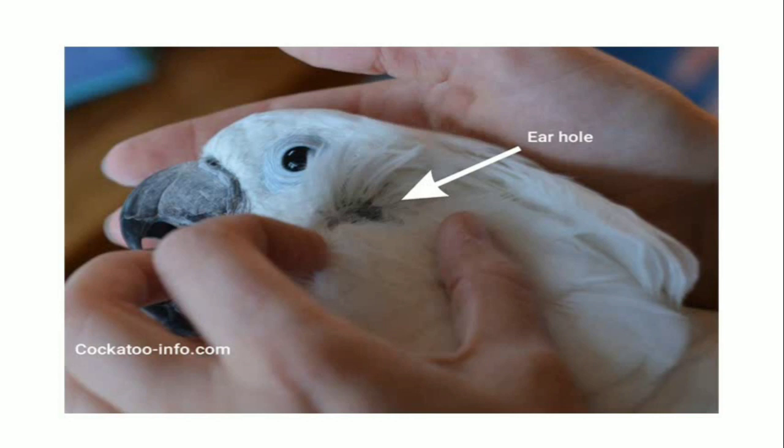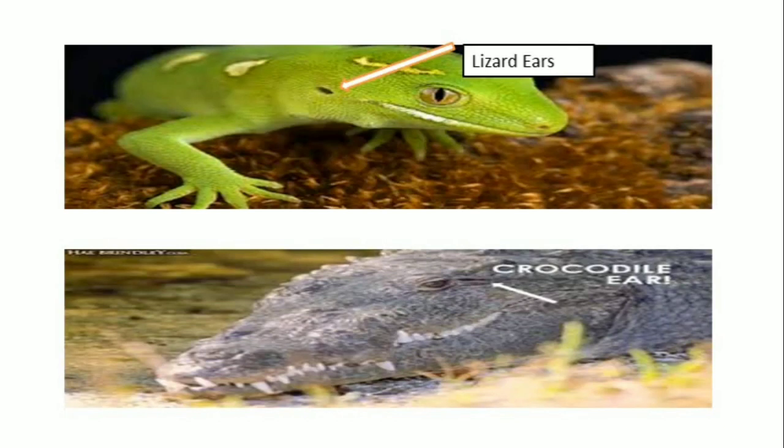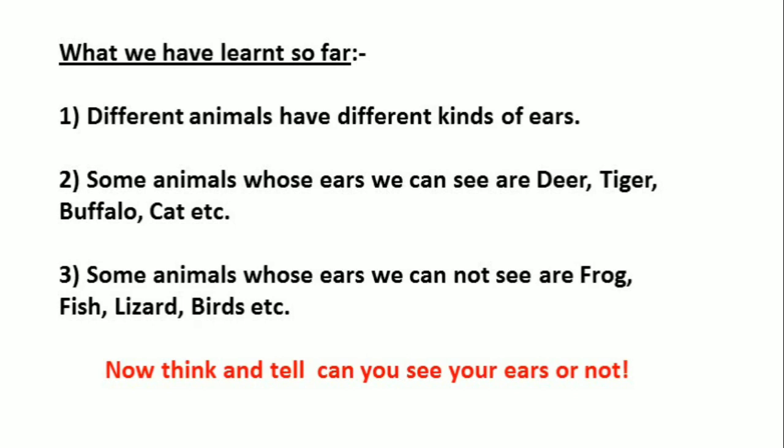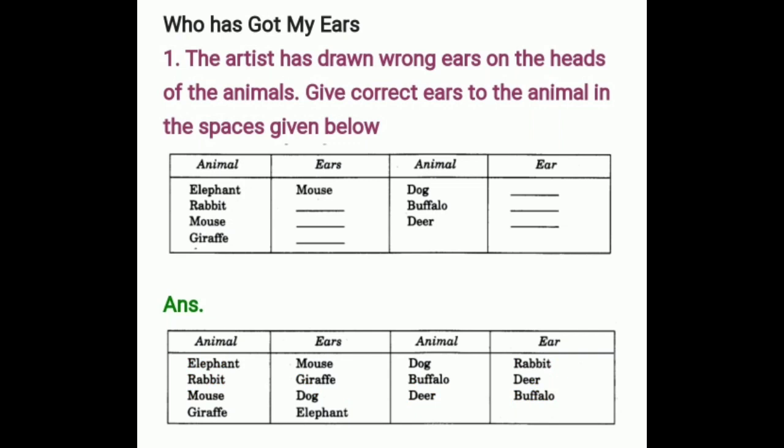Birds do have ears but we cannot see them. So far we have learnt: different animals have different kinds of ears. Some animals whose ears we can see are deer, tiger, buffalo, cat, etc. Some animals whose ears we cannot see are frog, fish, lizard, birds, etc. Now think and tell — can you see your own ears or not?